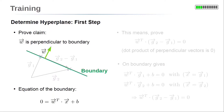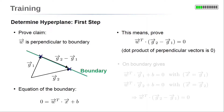First, we will prove that the parameter vector w is perpendicular to the separating boundary. Let's choose two arbitrary points on the boundary; the corresponding vectors are denoted by g1 and g2. The difference vector g2 minus g1 is then a vector on the boundary. So if the parameter vector w is perpendicular to the boundary, the dot product of w and the difference vector g2 minus g1 is zero.